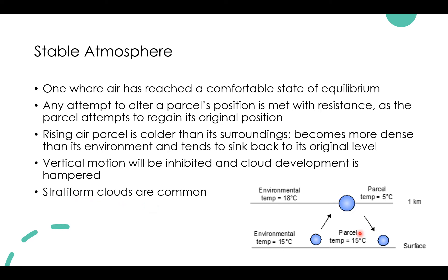Let's examine stability in the diagram. The blue ball represents the air parcel. At the surface, the parcel temperature is 15°C and the environmental temperature is also 15°C. If I try to force the air parcel up to one kilometer, it's going to want to sink right back down — because it's stable. At one kilometer, the air parcel temperature is 5°C while the surrounding environmental temperature is 18°C. This parcel is colder than the environmental temperature and will want to sink back to the surface. That's an example of a stable atmosphere.